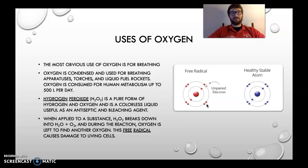Anyway, when applied to a substance, H2O2 breaks down into water and oxygen. And during the reaction, oxygen is left to find another oxygen, creating what's called a free radical. It's also called a harmful free radical by some. And what the harmful free radical does is when finding another oxygen, it starts to rip things away from other things. So here's a free radical, right? Seven valence electrons. That's a problem. Everything wants eight.